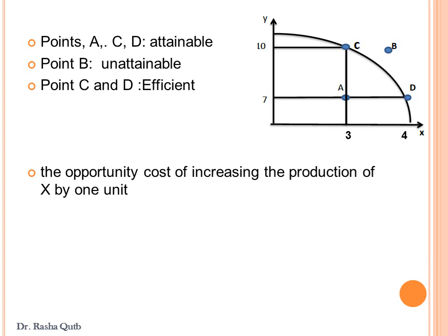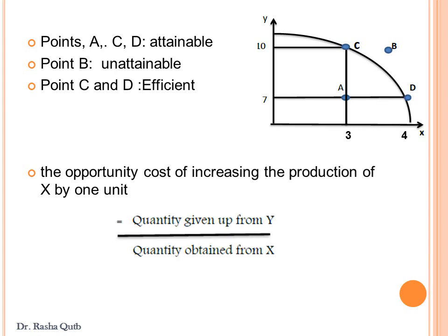The last required point is to calculate the opportunity cost of increasing the production of X by one unit. We apply the following formula: the opportunity cost of increasing the production of X by one unit equals the quantity given up from Y, which is 3 units, over the quantity obtained from X, which is 1 unit — equal to 3. It could be negative because we have a negative relationship between X and Y. This means that to increase production of X by 1 unit, we must decrease production of Y by 3 units.